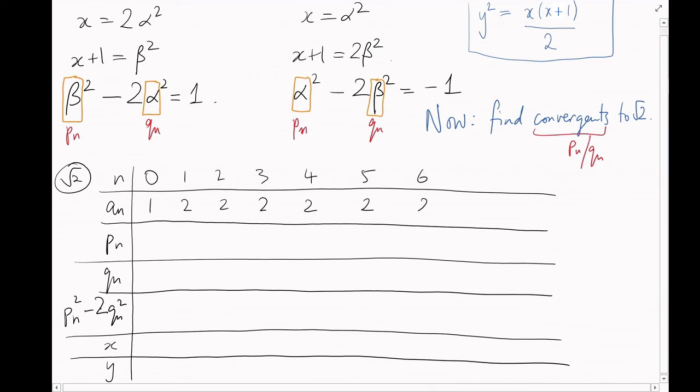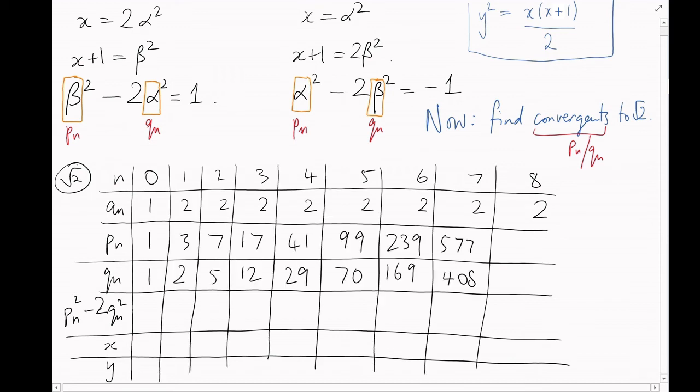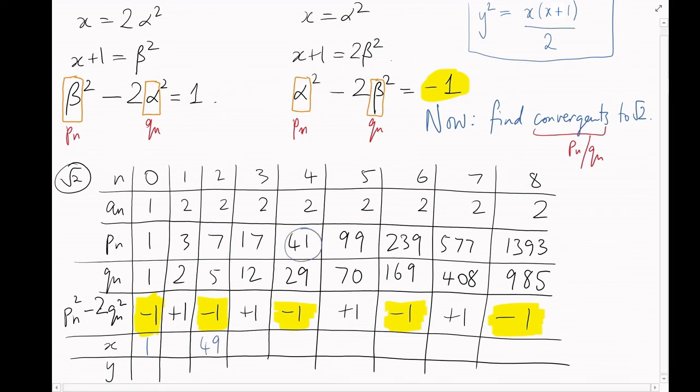So, here are our partial denominators. We worked this out using the continued fraction for root 2 last time. Here are the convergents. We can work these out using the recurrence relations. We evaluate Pn squared minus 2Qn squared in each case. Now, the n equals 0 column has a minus 1. This is case 2. In other words, it's going to give a solution to the set of equations on the right. I'll just highlight all the case 2 solutions in yellow. For these, the value of x is alpha squared. That is, Pn squared. So, in the n equals 0 column, x equals 1 squared. In the n equals 2 column, x equals 7 squared. In the n equals 4 column, x equals 41 squared. And so on.